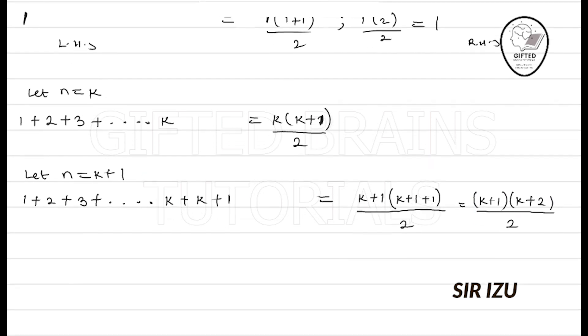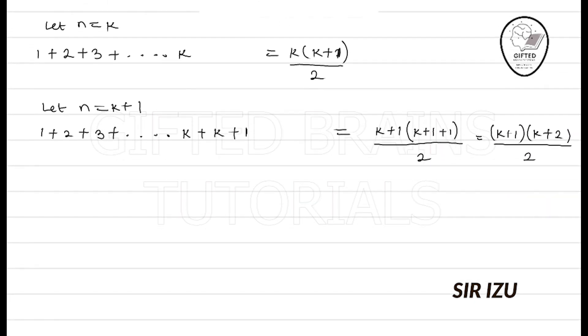The point is, can we make our left-hand side give us what the right-hand side has given? Recall that everything from 1 to k gives us k times k plus 1 over 2 from step 2. Now we've added k plus 1. So we have k times k plus 1 over 2 plus k plus 1 over 1. Finding the LCM, that's k times k plus 1 plus 2 times k plus 1, all over 2.